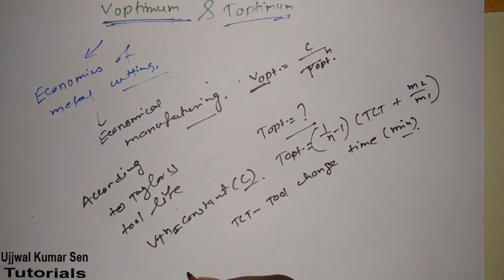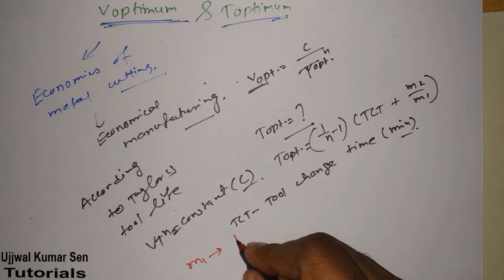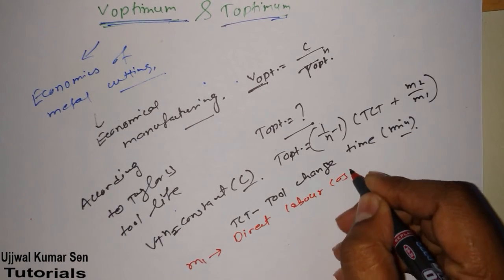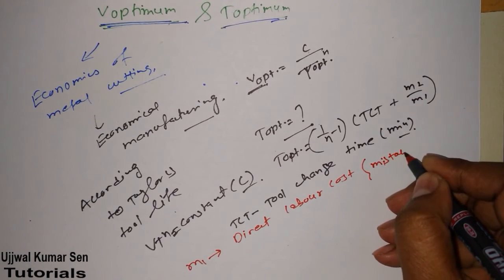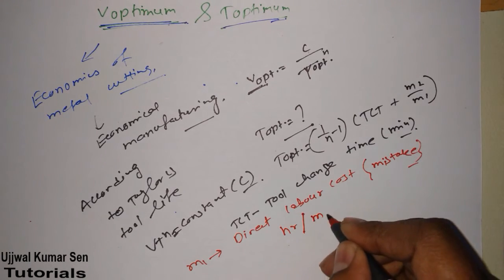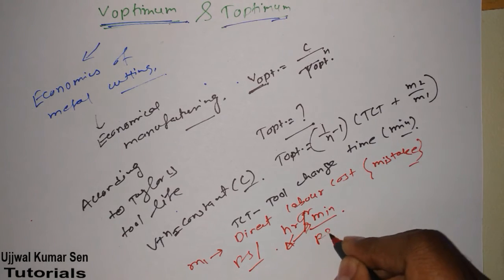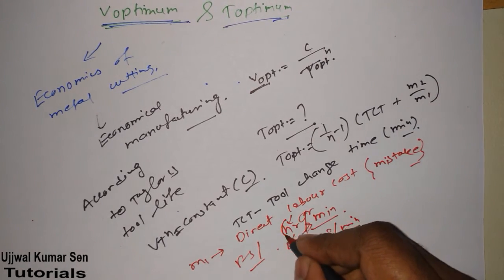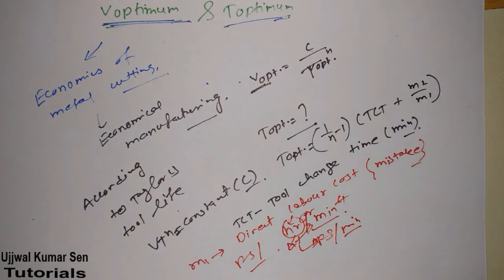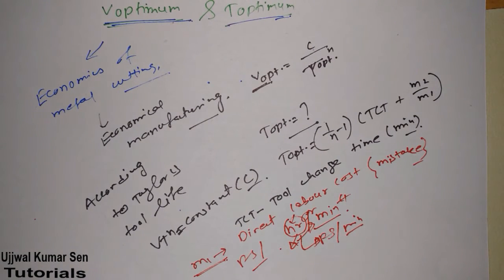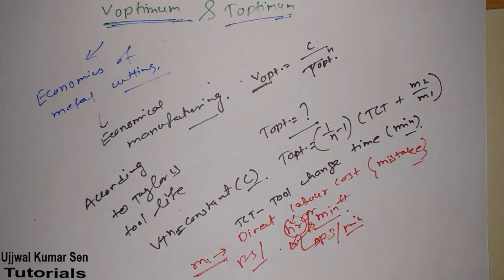M1 is direct labor cost. You can make a mistake here — in the question, it may be given as rupees per hour, but we have to convert it into rupees per minute. If it is given in hours, convert to minutes; if already in minutes, it's fine. Be careful not to make a unit conversion mistake.